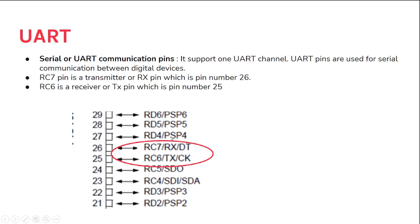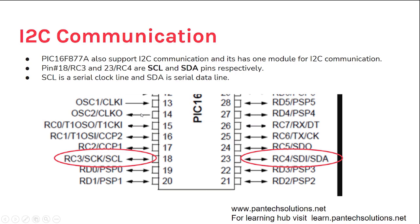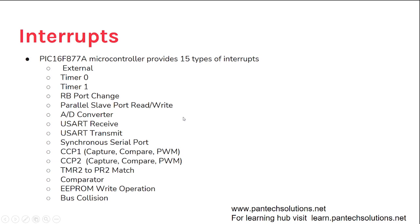For serial communication, it is used to communicate with other devices like microcontrollers or a PC via TTL logic. RC7 is the Rx pin (pin 26) and RC6 is the Tx pin (pin 25) for UART. For I2C communication, RC3 is SCL and RC4 is SDA — providing the serial clock and serial data lines for I2C communication.